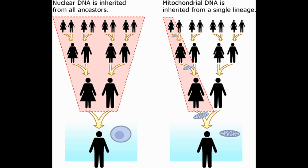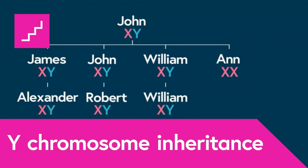In our cells is an organelle called the mitochondrion, which has bacterial heritage. Mitochondria are pretty much only passed maternally — males normally cannot pass on their mitochondria, though on rare occasions males can, in a phenomenon called paternal leakage. It happens so infrequently that we don't really need to concern ourselves with it here. Conversely, the Y chromosome can only be passed from male to male — father to son to grandson, etc. This is called patrilineality.